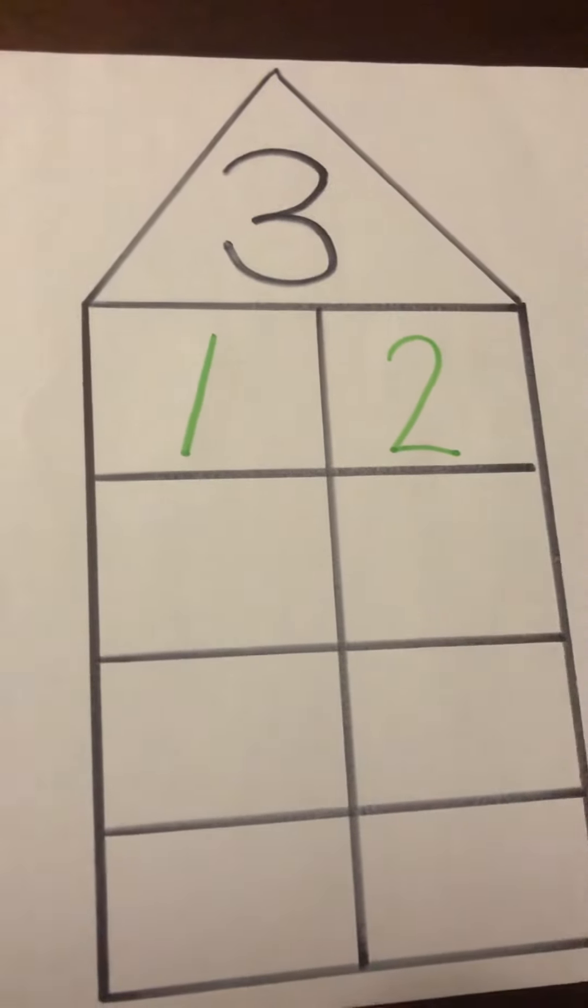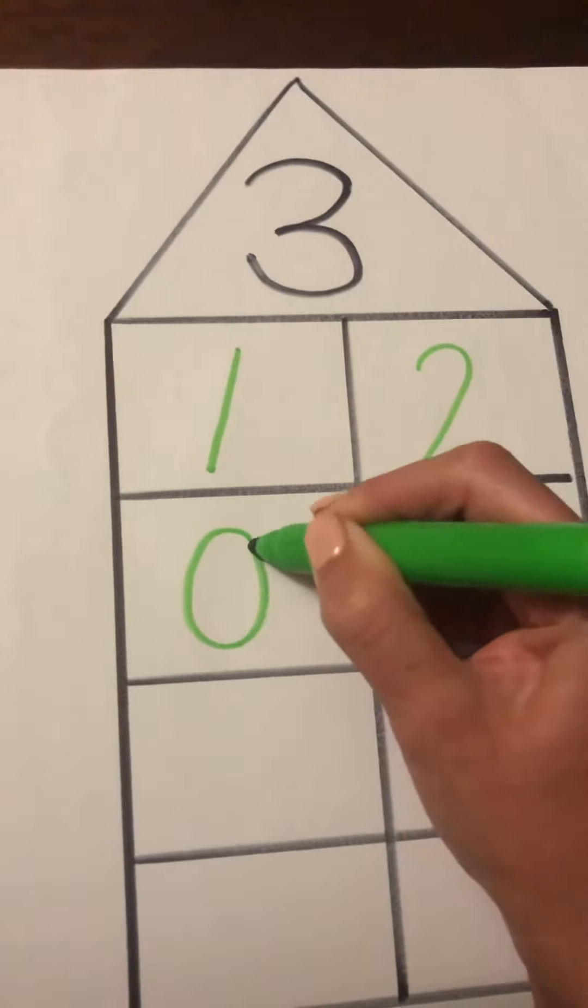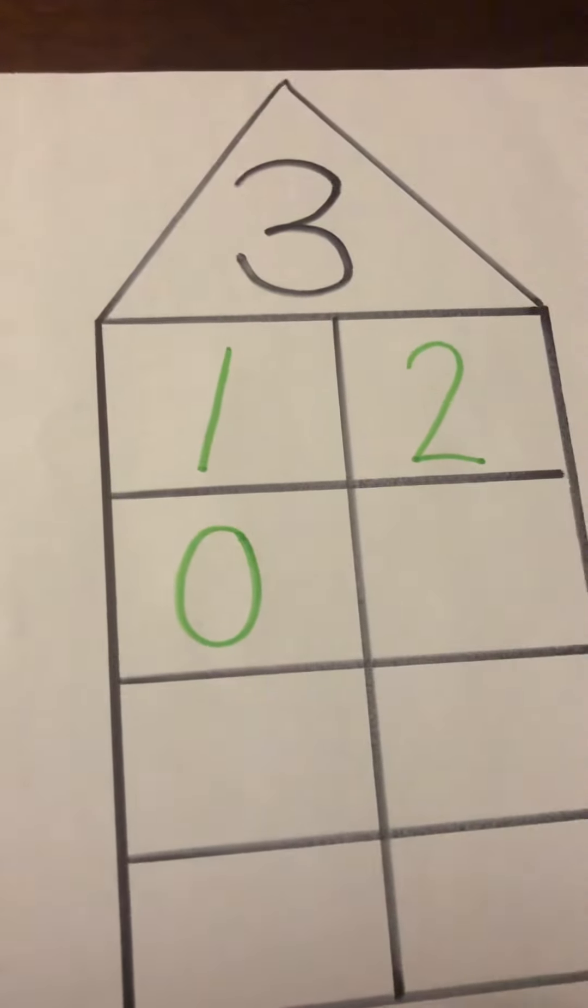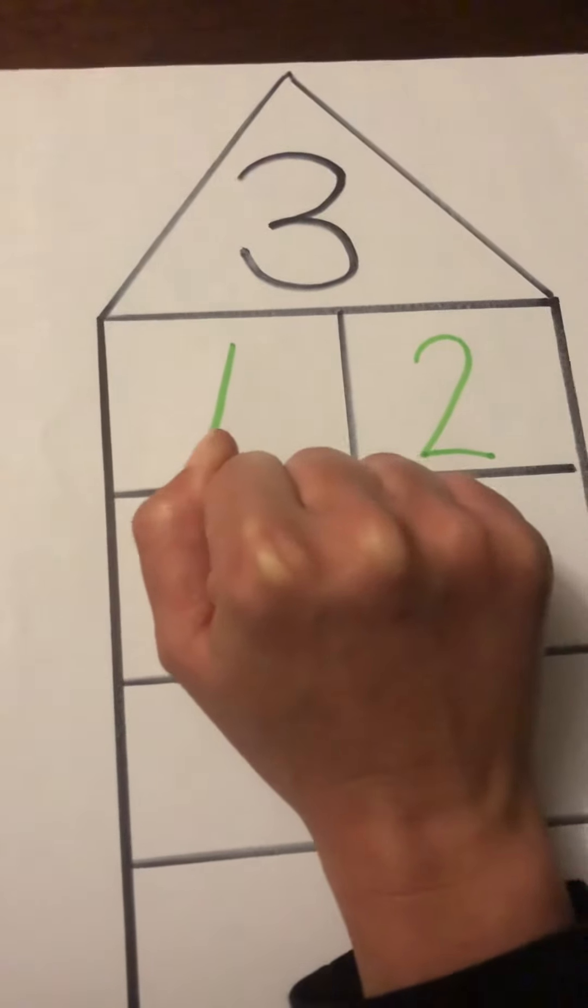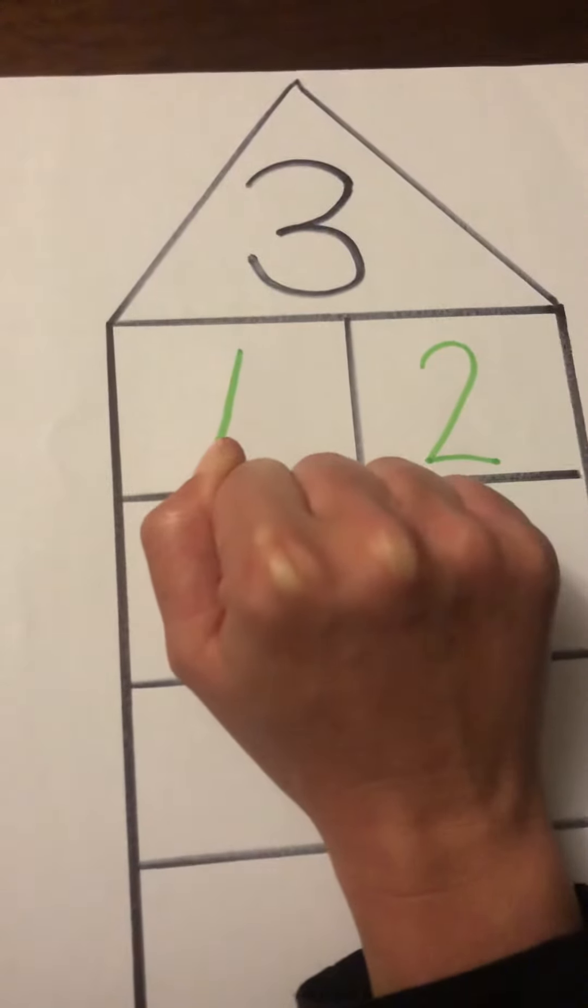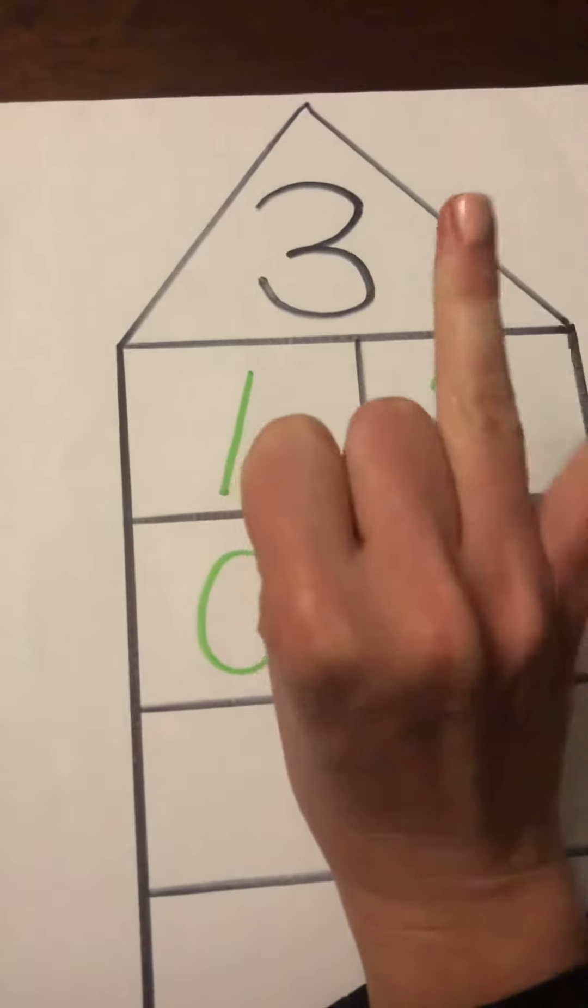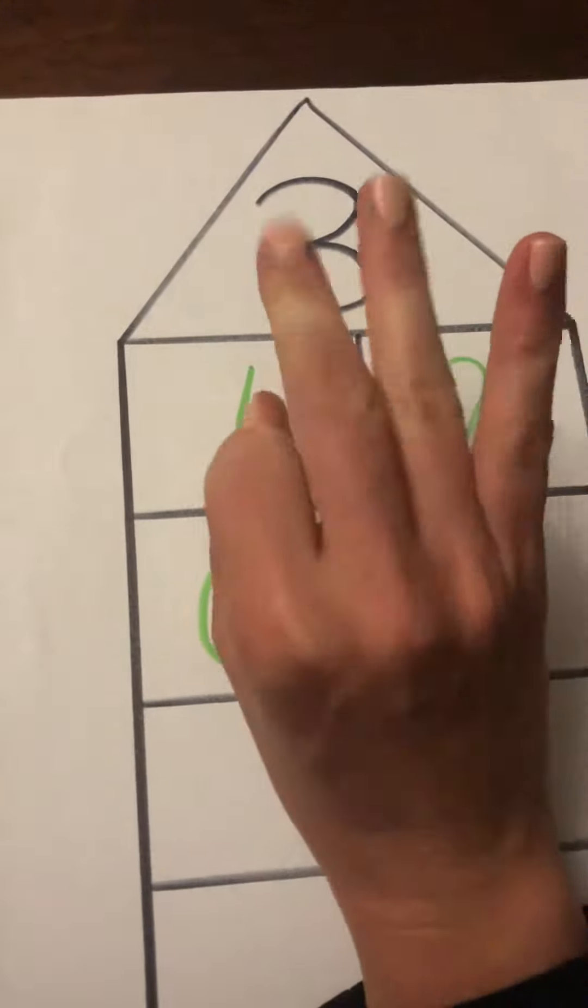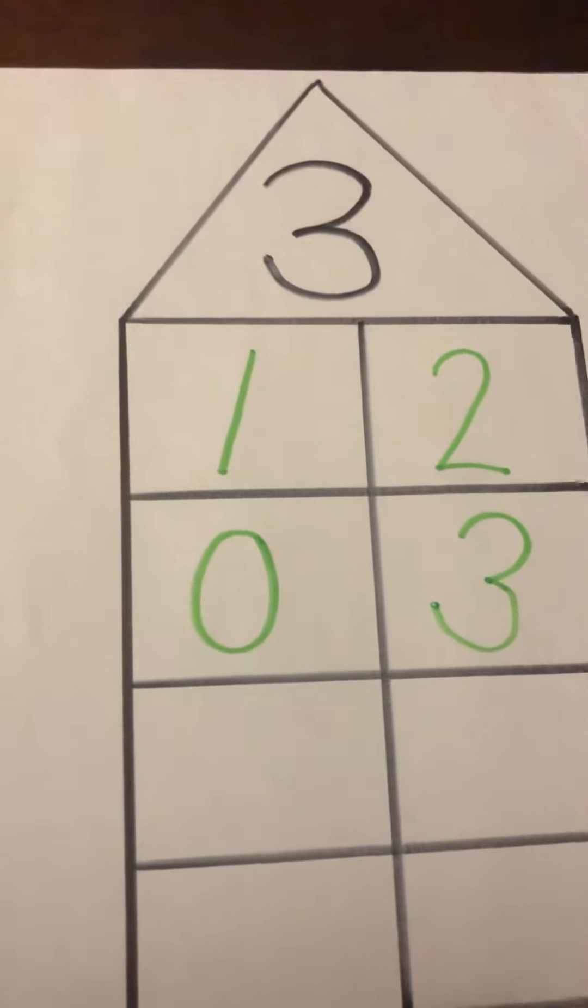Let's do another one. What about zero? If teacher has nothing, hold your fist. I have nothing. How much must I add to get to three? One, two, three. So if I have nothing, I must add three so that I can get to three.